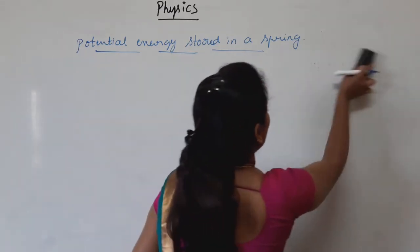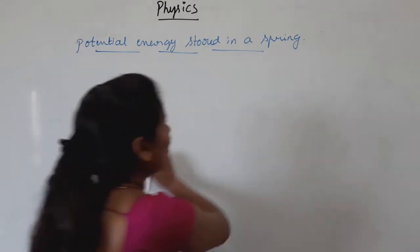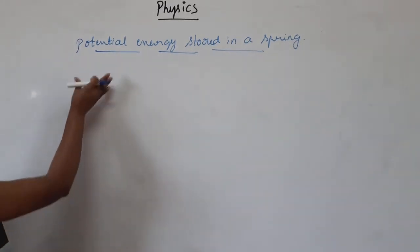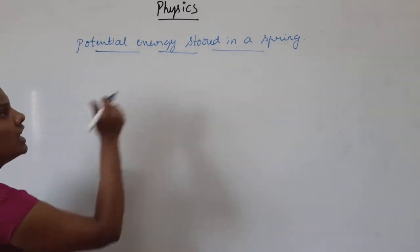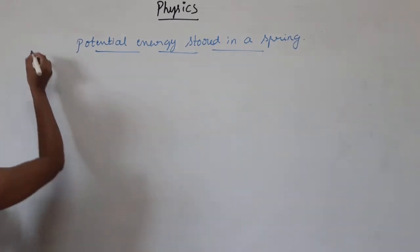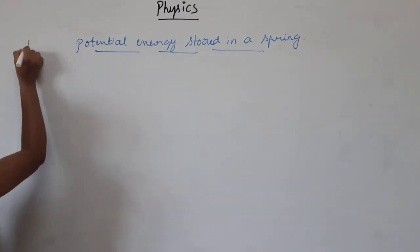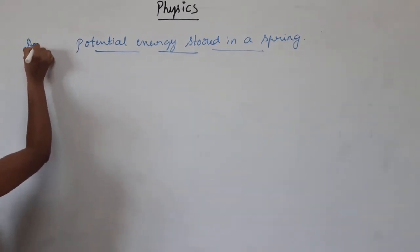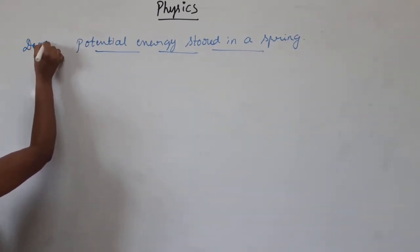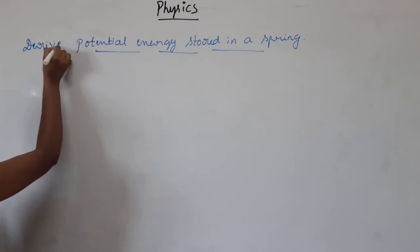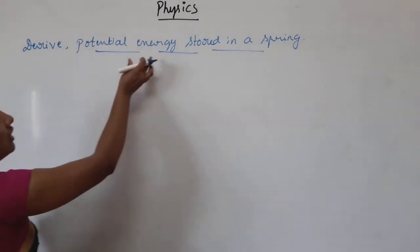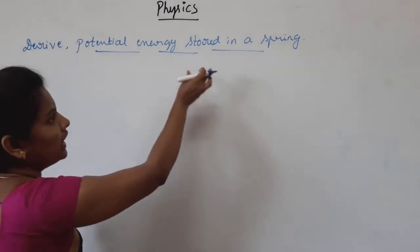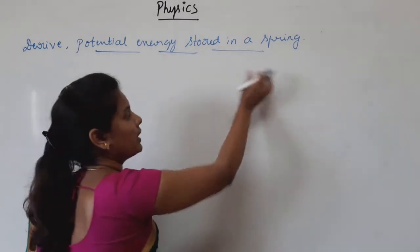Now we have to derive the expression for potential energy stored in a spring. So we derive the potential energy stored in a spring.